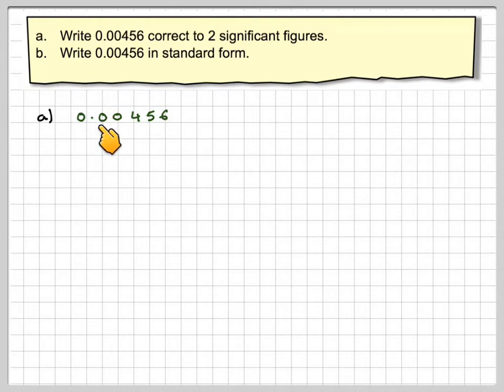the leading zeros are not significant figures. This is not a significant figure, this is not a significant figure, this is not a significant figure. This is the first significant figure, and this is the second, and this is the third.